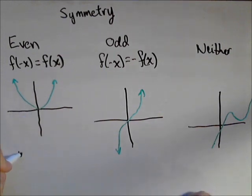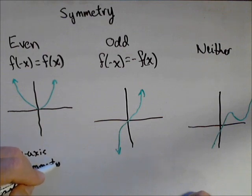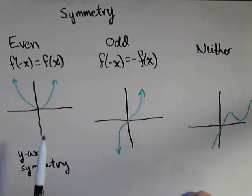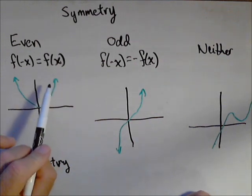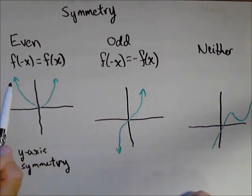A good example is x squared. Because if we were to rotate x squared about the y-axis, we would get the exact same function. So what we see going over here on the right side, we want to see a mirror image over on the left side.